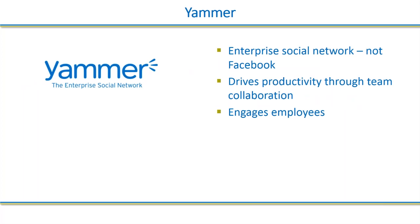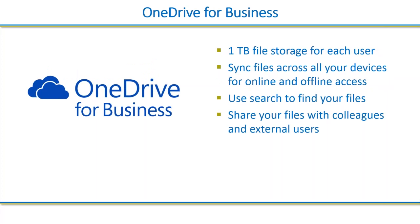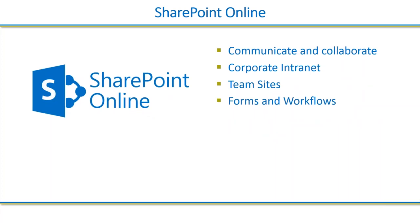Yammer is something I'm very keen on — we're not going too deep into it today from an enterprise social within projects point of view, but it's basically your social network for your enterprise. It's not Facebook — it's really about driving team collaboration and engaging employees. If you're afraid of it when you see 'social network' attached to it, don't be — it's a very powerful tool and a great way to build and share knowledge within your organization, becoming a record of that knowledge for current and future staff. Then we have OneDrive for Business — basically a file store for files you're working on yourself. You can share it with colleagues, but for deeper sharing, SharePoint is the place. SharePoint Online is obviously a place to communicate and collaborate — it can be your corporate intranet — where we create team sites and that's really where we're going to focus from a project's point of view. We can do forms and workflows, which we'll also touch on today.